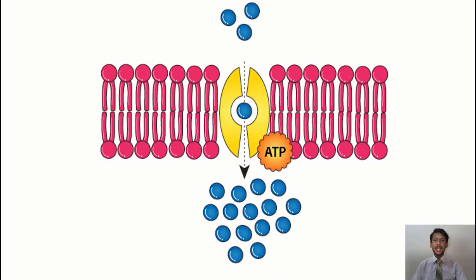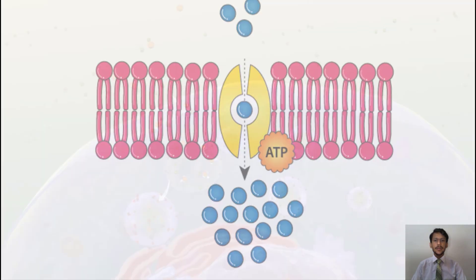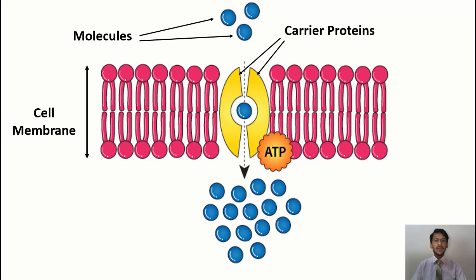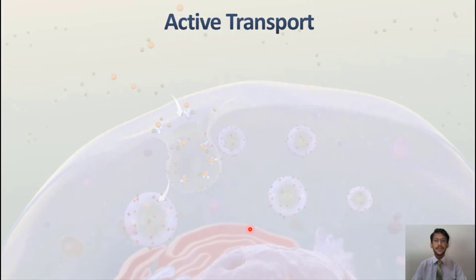Now through this diagram we will understand how active transport is carried out. The pink color represents the membrane, and the yellow color represents two proteins called carrier proteins. The molecules here are in low concentration and here they are in higher concentration. This movement from low to higher concentration is called active transport, and it occurs through carrier proteins. This movement is only possible when ATP comes and releases some energy.